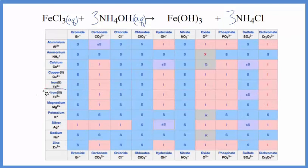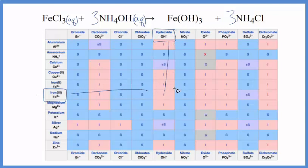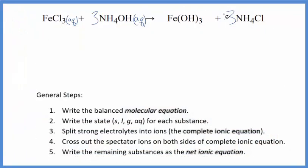So we find iron three right here and across the top, the hydroxides. We go over and down. And that I means it'll be insoluble. So iron three hydroxide, that's going to be a solid. So we'll put a S for solid. So when these two react, this is going to fall to the bottom of the test tube. It'll be a precipitate.